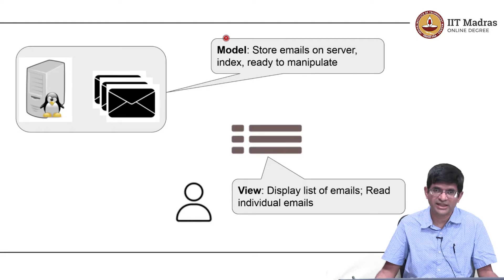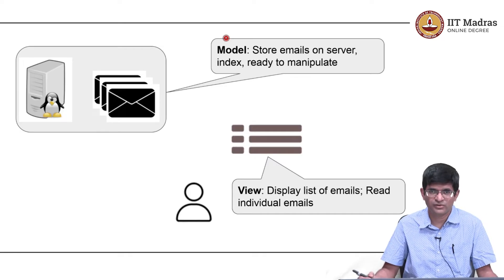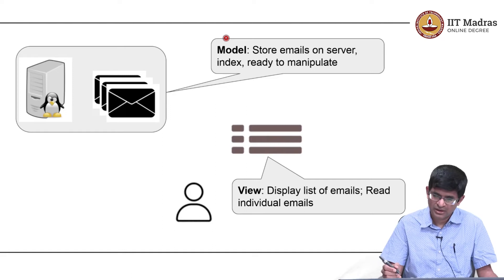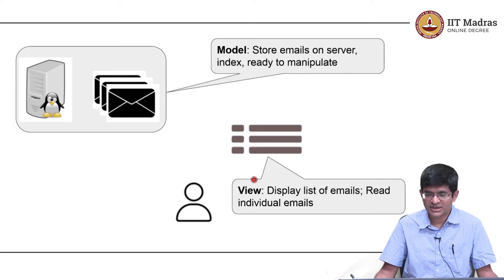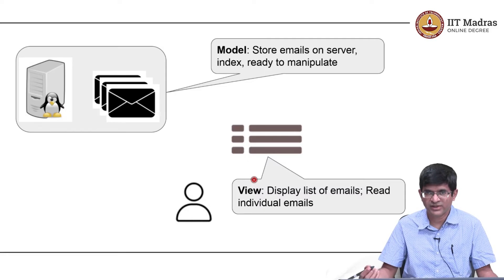What is metadata? It basically says who sent the email, to whom was it sent, when was it sent, how big is it, does it have attachments — all of that is metadata about the email. The server probably indexes all of those to make its life easier later on. Along with that you also have the view, and the view essentially is based on the user. The user basically wants to view something — show me a list of emails. Typically what that would mean is I would send a request to the server saying show me a list of emails. The server would need to pull out all emails addressed to me, sort them in some order, and finally send it back to my device for display.